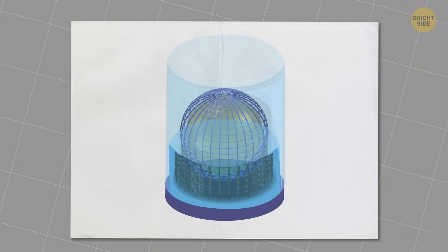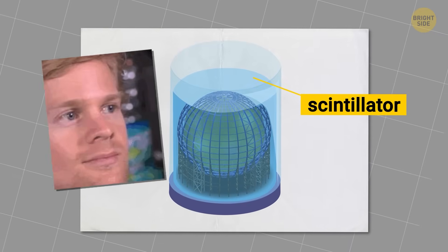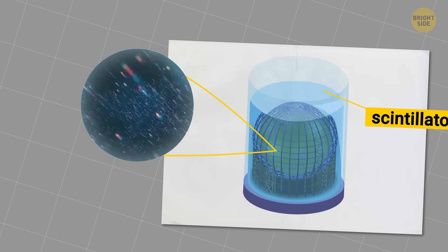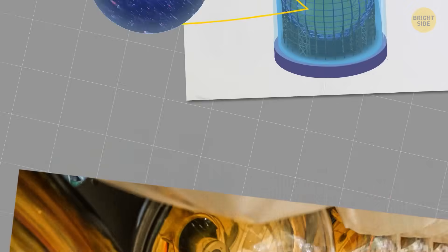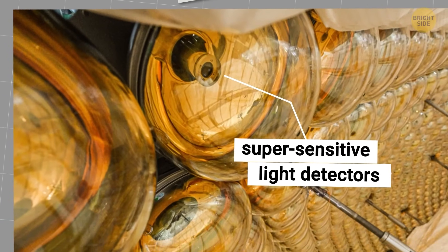Juno is an enormous sphere, filled with 20,000 tons of a special liquid called a scintillator. Scintillating, isn't it? Okay, I'll stop. This liquid glows faintly when particles interact with it. Surrounding the sphere are 43,000 supersensitive light detectors, which will pick up these tiny flashes of light.